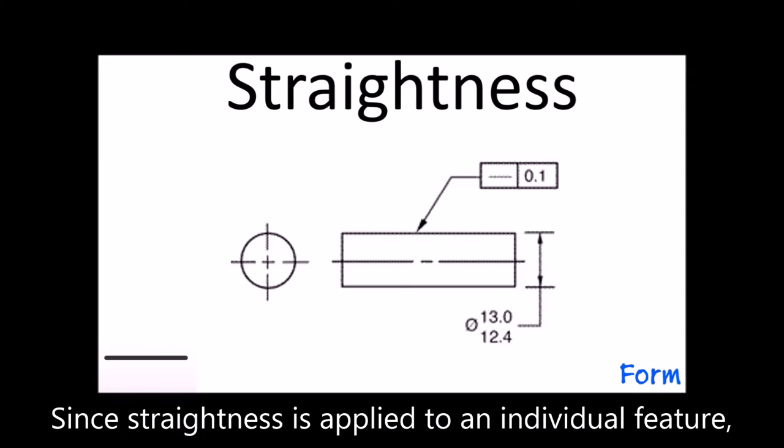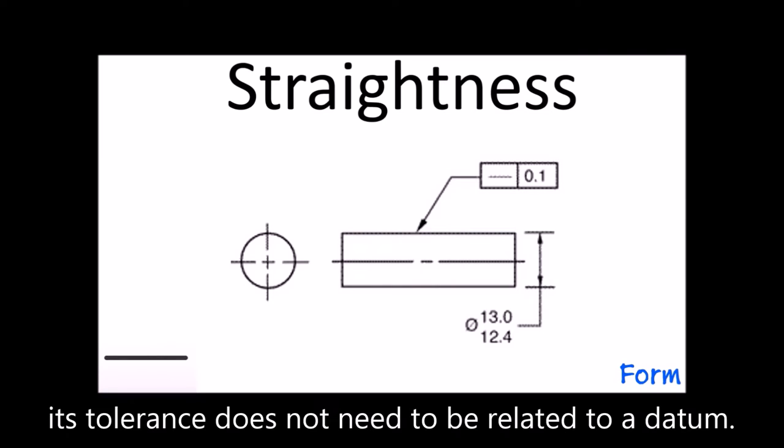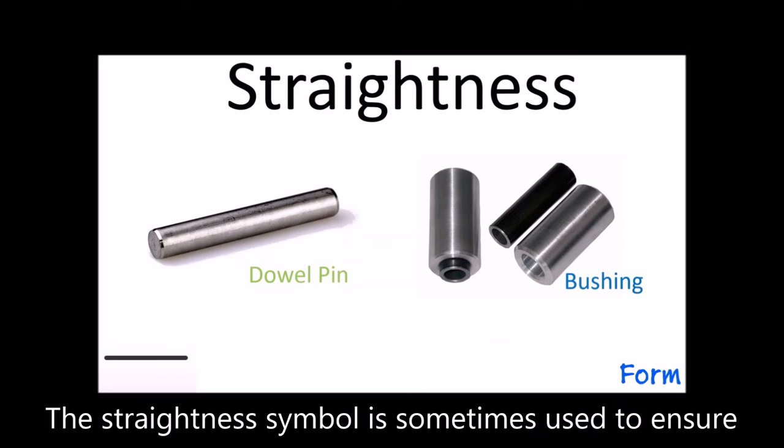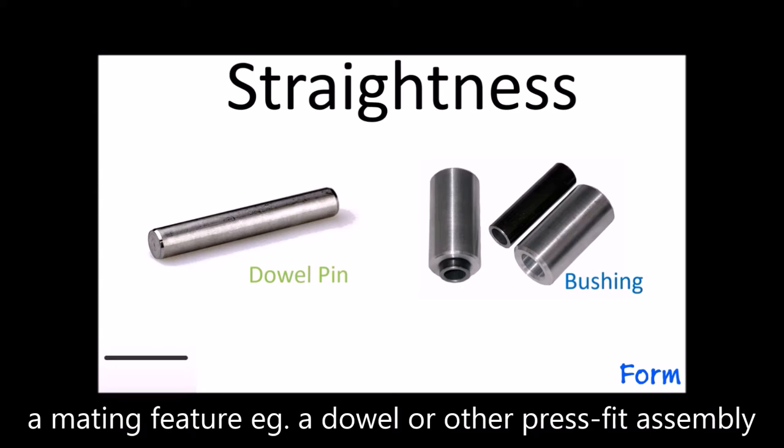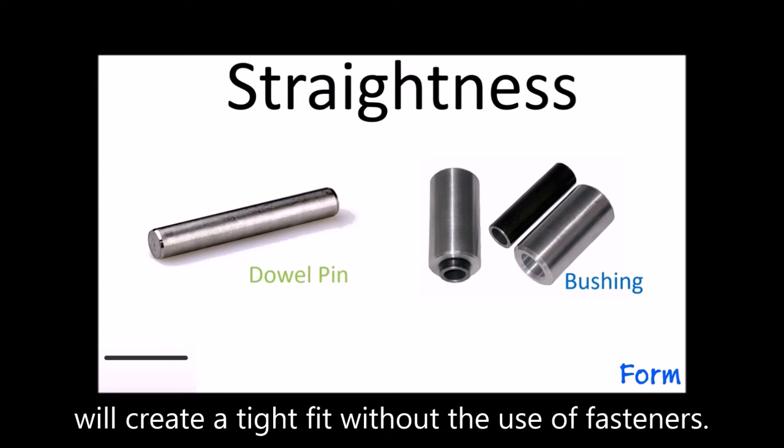Since straightness is applied to an individual feature, its tolerance does not need to be related to a datum. The straightness symbol is sometimes used to ensure mating features, for example, a dowel or other press-fit assembly create a tight fit without the use of fasteners.